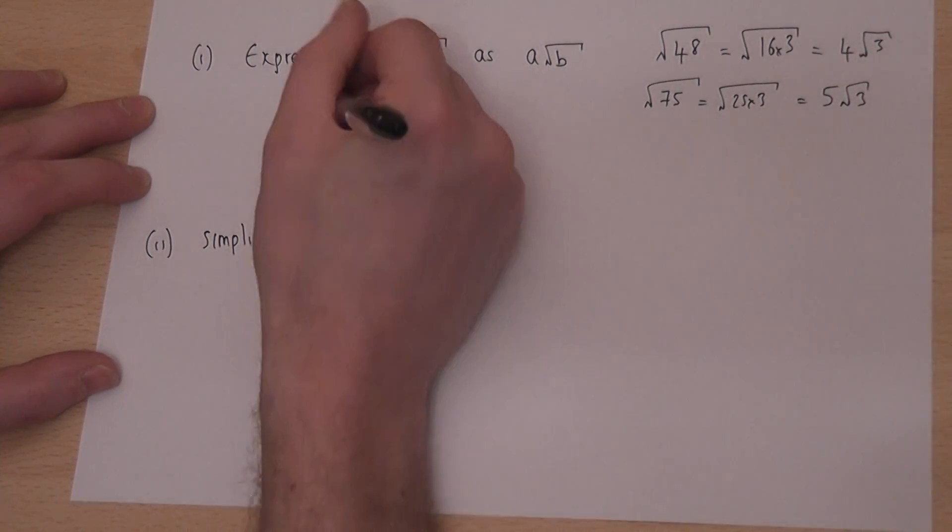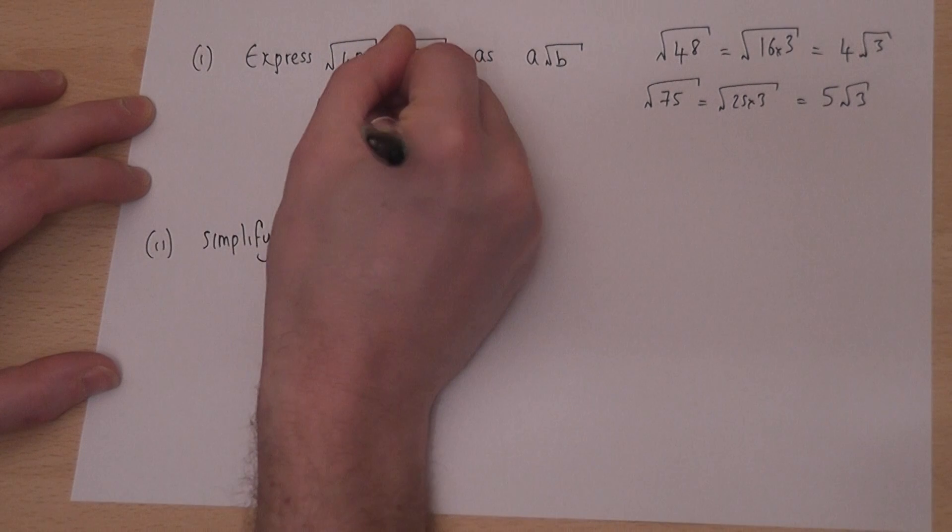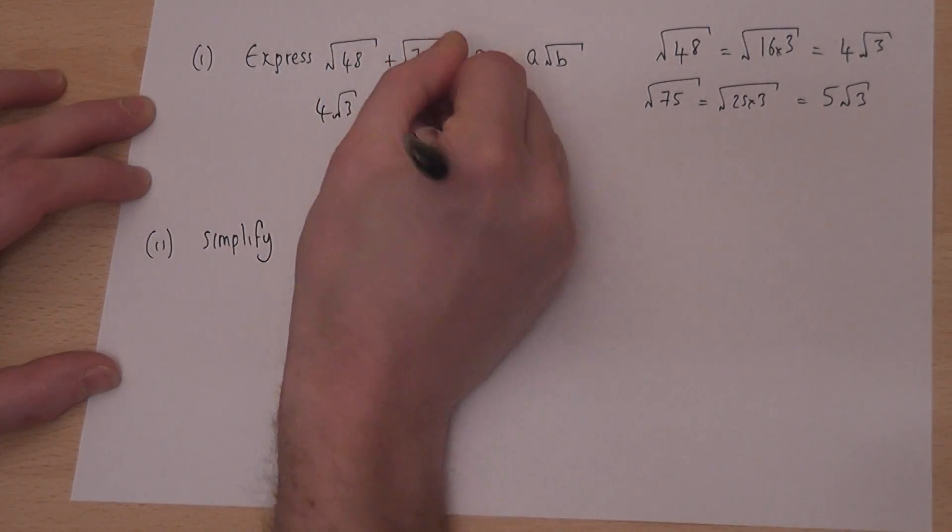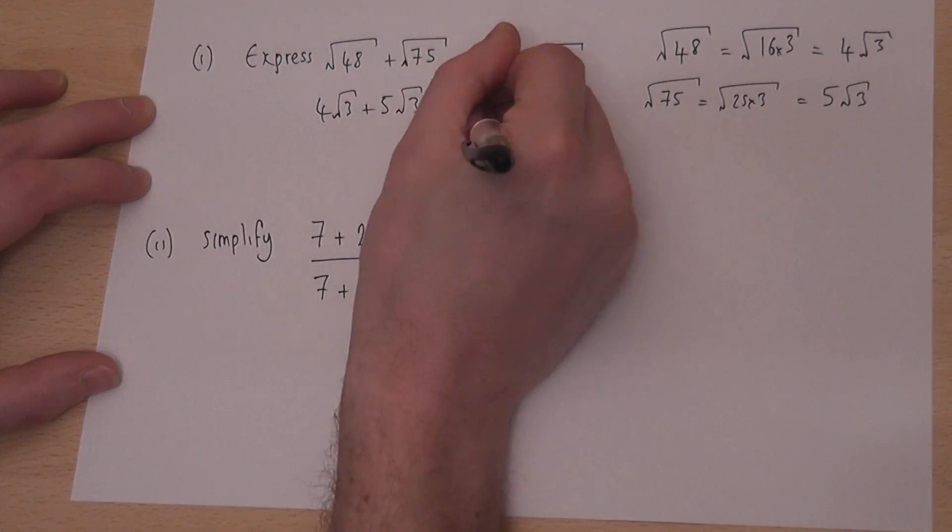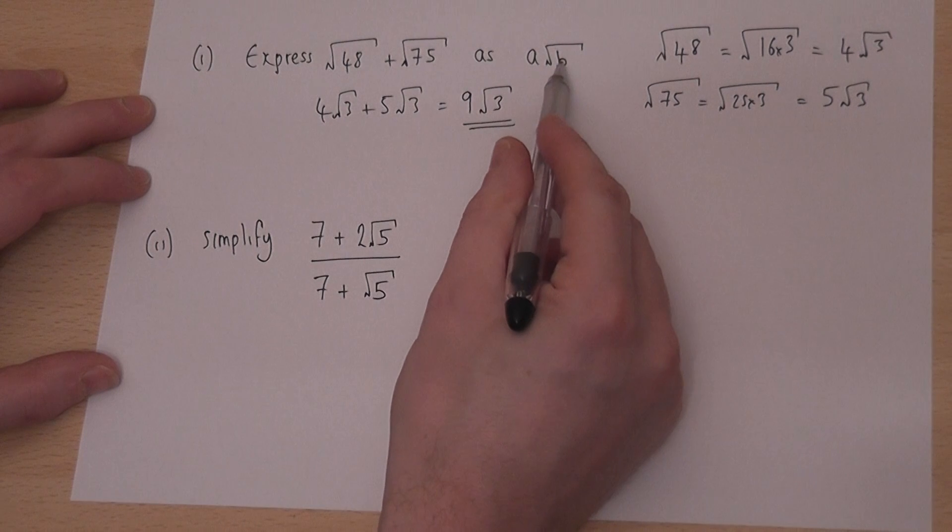So this question boils down to 4 root 3 plus 5 root 3. 4 plus 5 is 9, so it's 9 lots of root 3. So a is 9 and b is 3.